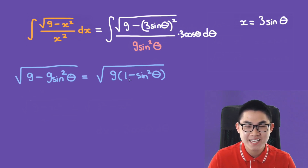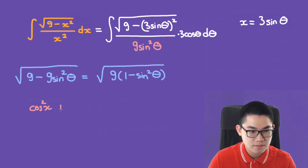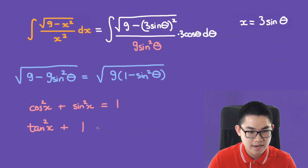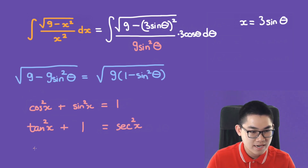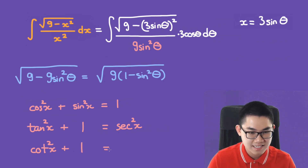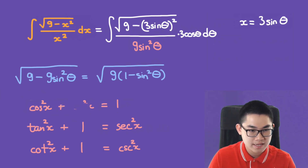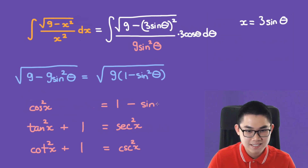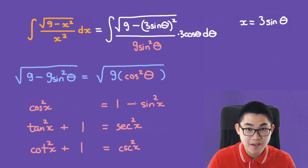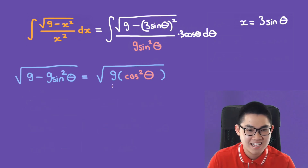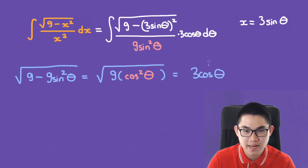Using the trigonometric identity cos²x + sin²x = 1, we get 1 − sin²θ = cos²θ. So the square root of 9cos²θ is 3cosθ. We also have the identities tan²x + 1 = sec²x and cot²x + 1 = csc²x. Replacing the numerator, we get 3cosθ as the numerator.